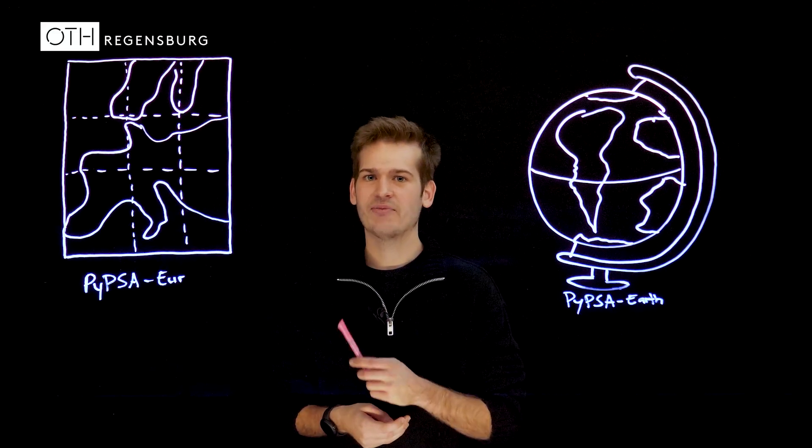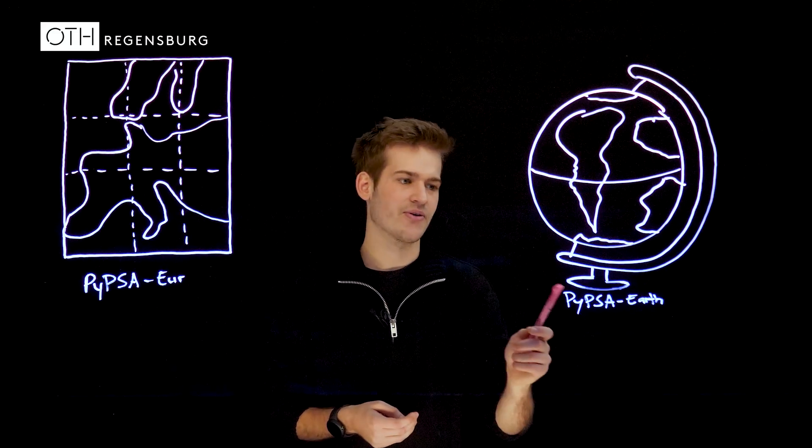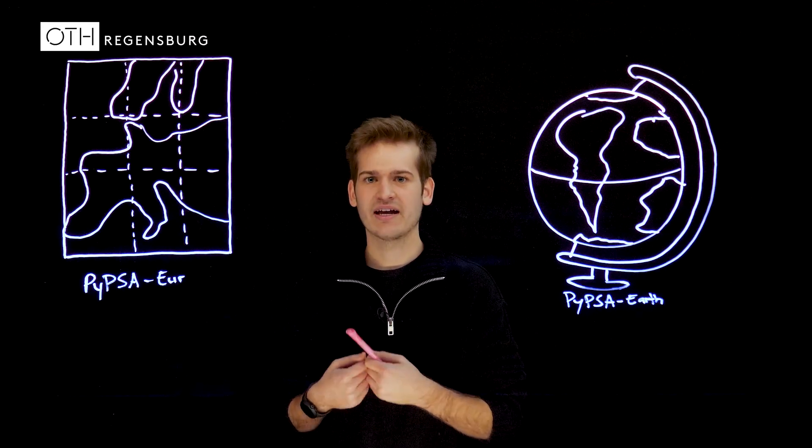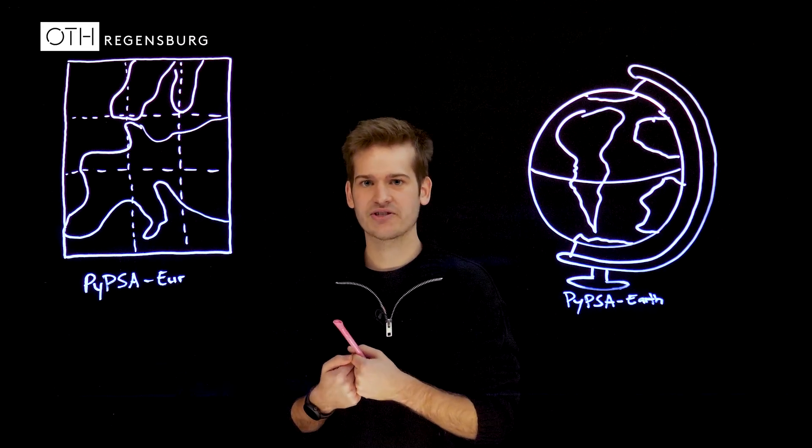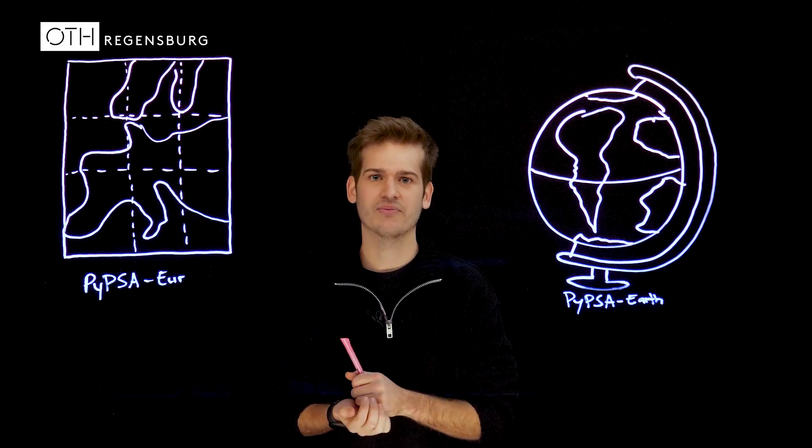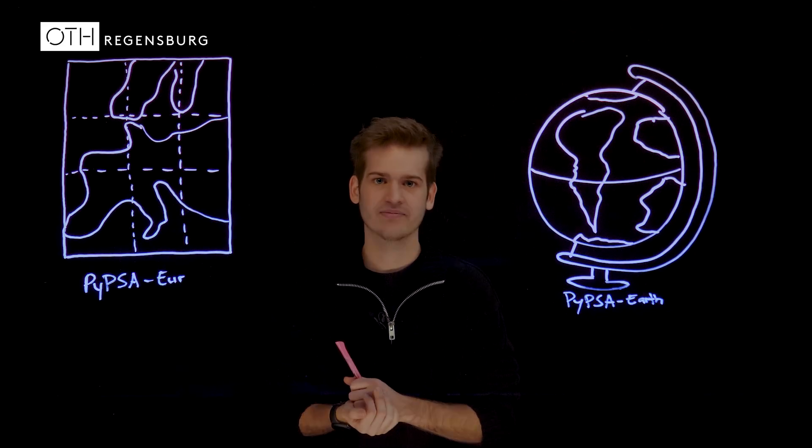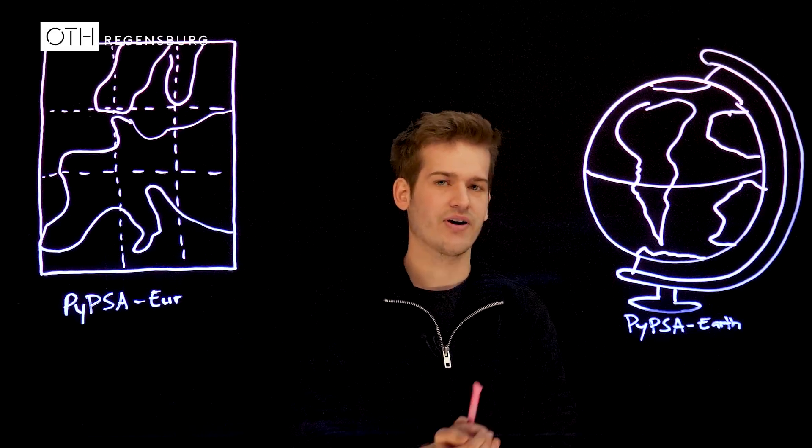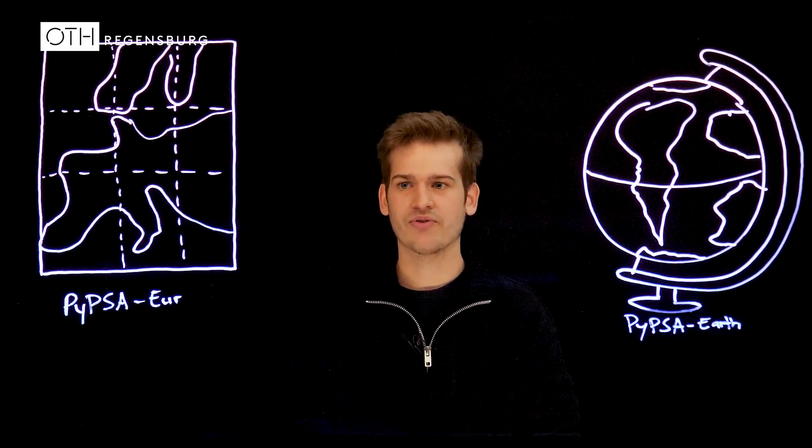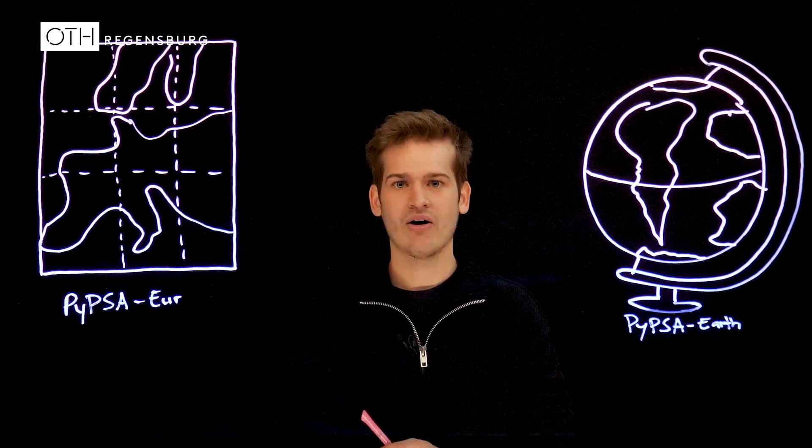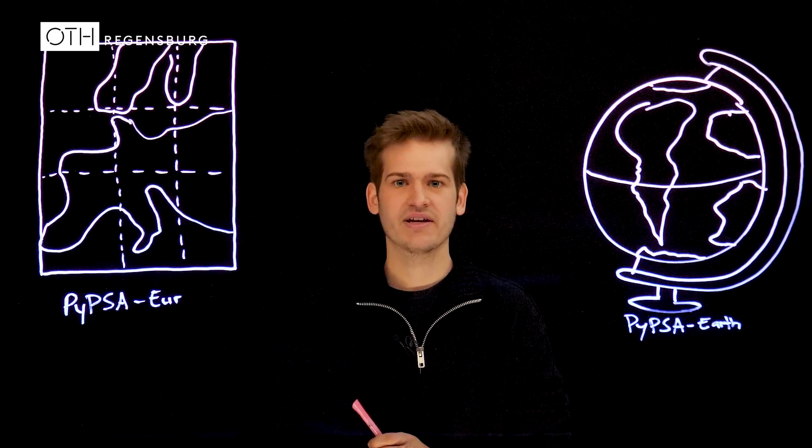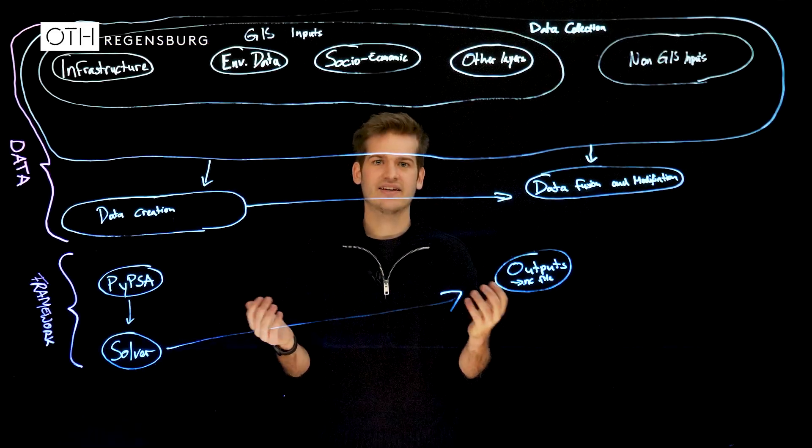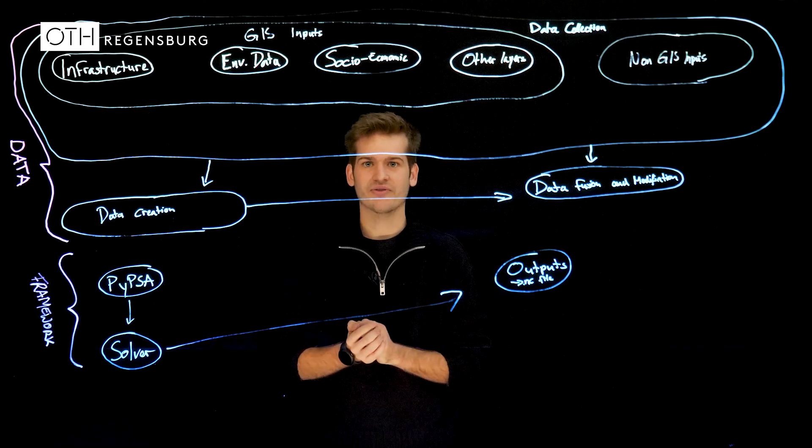This is where the energy models PIPESAR-EUR and PIPESAR-Earth come into play which are generating corresponding energy systems of regions based on input data and solve them using the PIPESAR framework. The structure of PIPESAR-EUR and PIPESAR-Earth are pretty much the same. With PIPESAR-EUR you can model all European regions and with PIPESAR-Earth you can model the whole world. Let's take a look at the structure of the model.